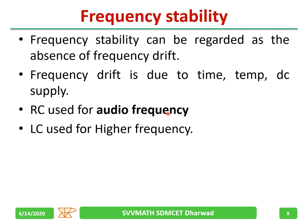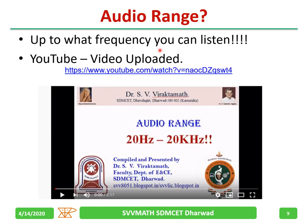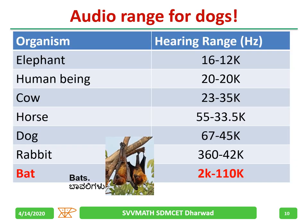RC components are used for audio frequency and LC components are used for higher frequencies. The audio frequency range differs for different animals. For dogs it is 65 Hz to 45 kHz. For human beings it is 20 Hz to 20 kHz. For bats it is 2 kHz to 110 kHz.